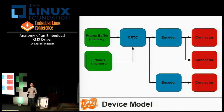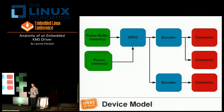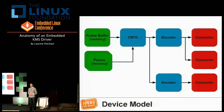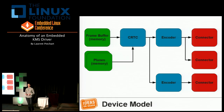The frame buffer is associated with a CRTC — CRT Controller. There are probably no CRTs in use nowadays in any Linux device, but the name remains. The CRTC gets a pointer to your memory frame buffer and scans it out to an encoder. The encoder takes the digital signals from the CRTC and encodes them into whatever format is needed for your display — analog VGA, analog TV, or various digital formats like HDMI and DVI.